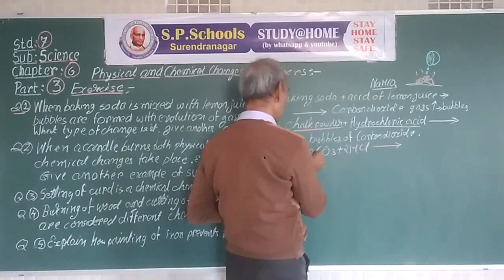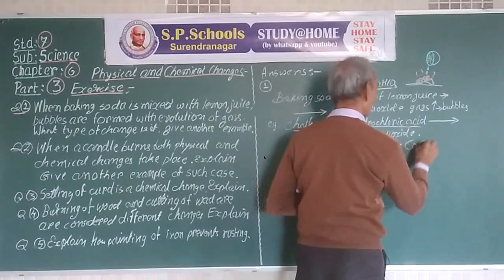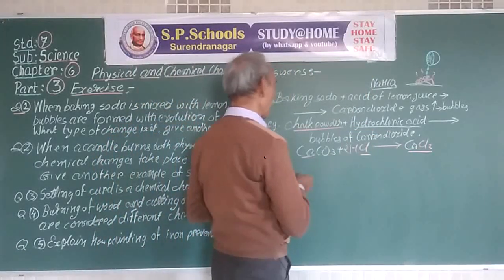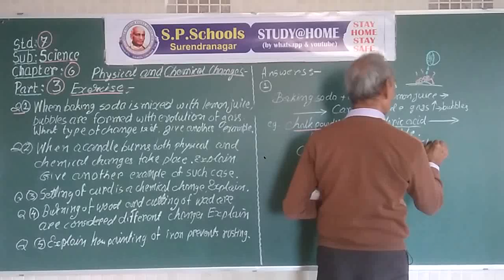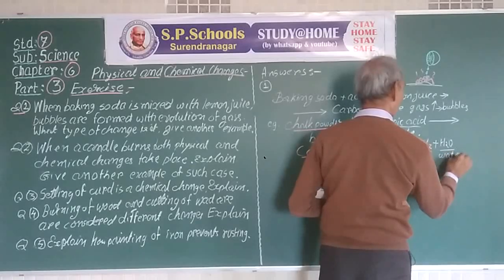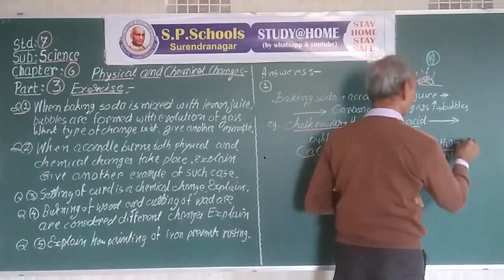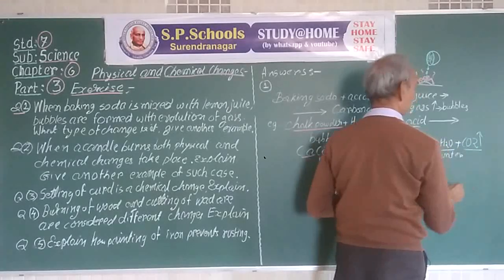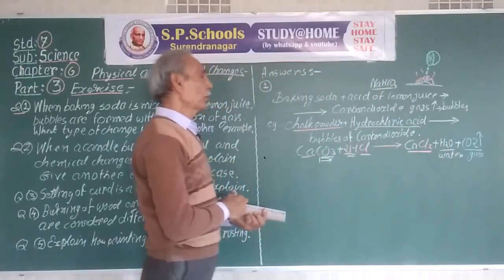We get calcium chloride, which is a salt of calcium. And from H2CO3, we get water plus carbon dioxide. Carbon dioxide is a gas that comes out as bubbles.